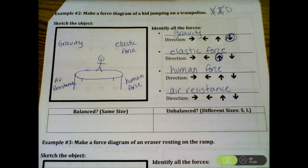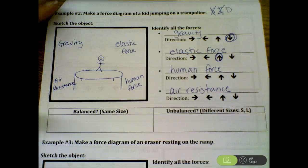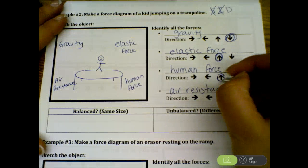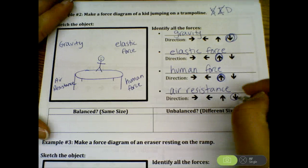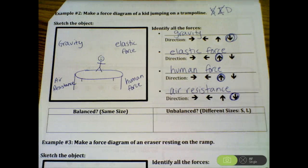Human force, again, the kid is helping himself go back up by using his leg. So we're going to say up. And air resistance is a counter force. Just like when you have your hand at the car window and you feel the air pushing against your hand, it's always going to go against the object. So that's why it's really important to know, is this person on their way down or on their way up? If they're on their way up, then air resistance is going to push against that and go down.